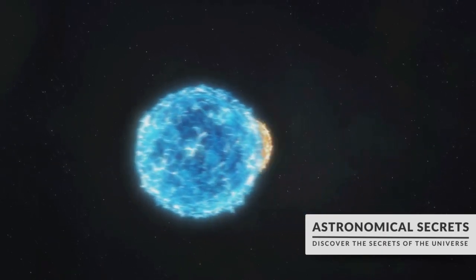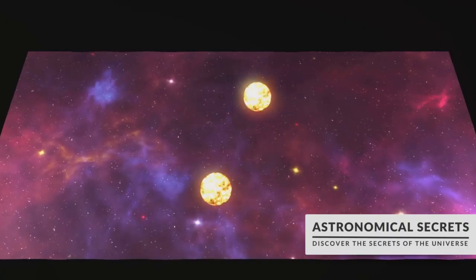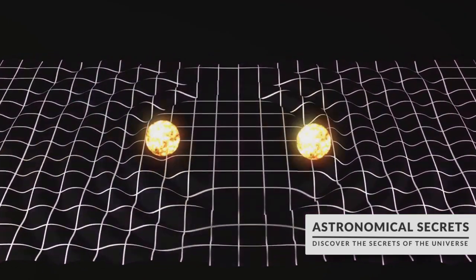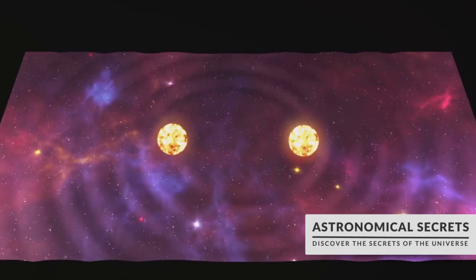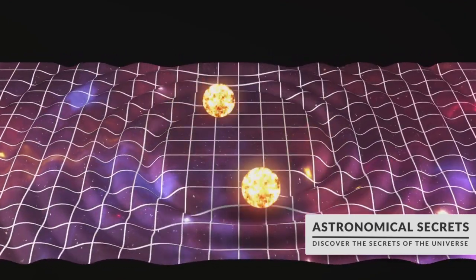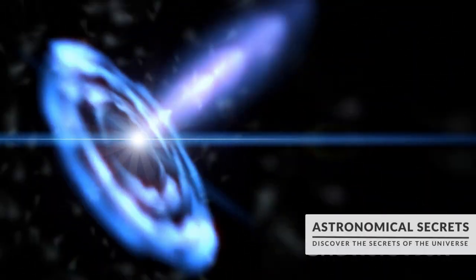Speaking of general relativity, pulsars also play a crucial role in testing its theories. Their extreme conditions, high density, magnetic fields, and rapid rotation, provide unique testing grounds. For instance, the famous Hulse-Taylor binary pulsar has been instrumental in verifying predictions of general relativity. The observed changes in its orbital period matched precisely with what Einstein's theory predicted, thus earning Hulse and Taylor the Nobel Prize in physics in 1993.